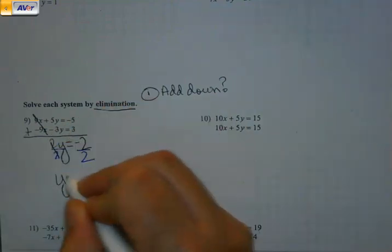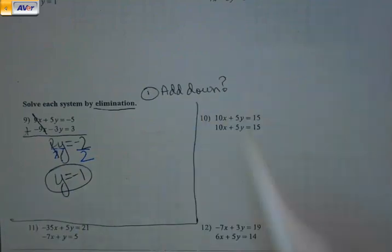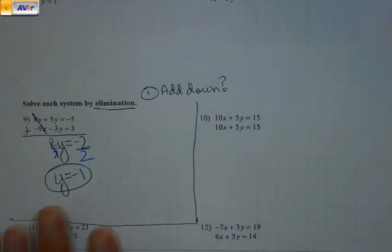You're like, this can't be this easy. Am I done? Not quite. That's my first step, because just like yesterday, we needed to find x and y. We just found y. So how am I going to find x?